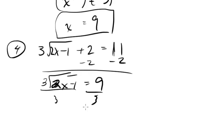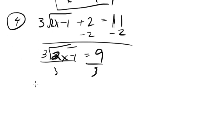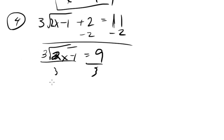Well, let's get rid of this 3 before we do anything else. We could square everything now, but let's just get rid of this 3 first. It's easier to get down to the bare radical first. Okay, so this is going to be radical 2x minus 1 equals 3.